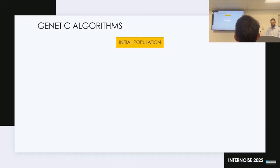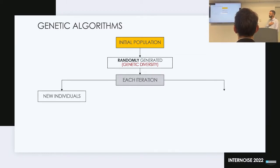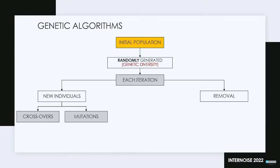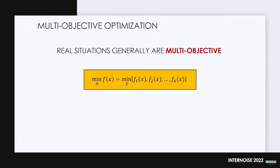These evolutionary optimization processes can be implemented with genetic algorithms, a process similar to what happens in nature. The initial population is generated completely randomly to ensure sufficient genetic diversity. After each iteration, new individuals are generated while others are removed. There are basically two processes to generate new individuals: crossovers, in which a new element is created by combining features of two samples in a certain proportion, and mutations, in which one feature of the new element is generated randomly to add even more genetic diversity. The population size stays constant.